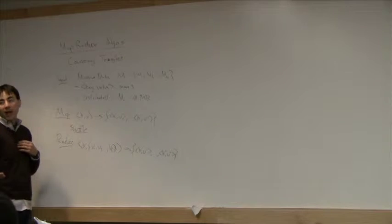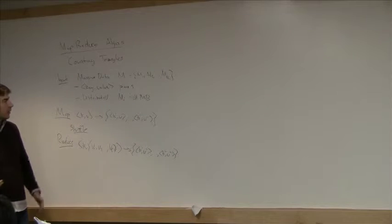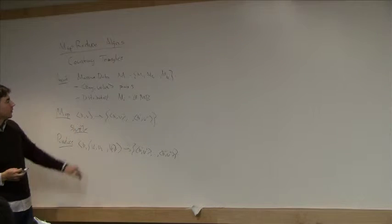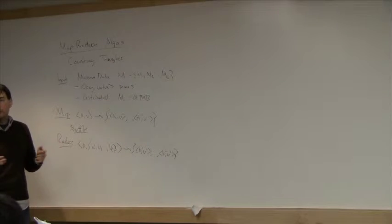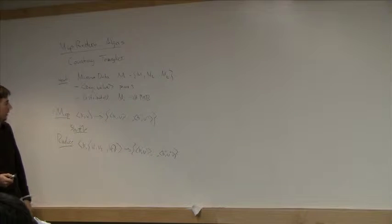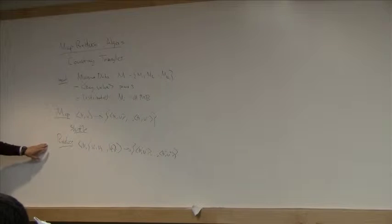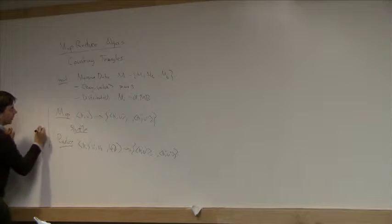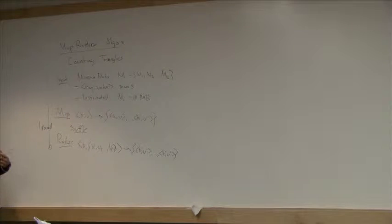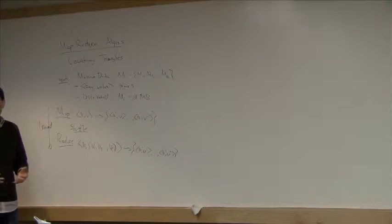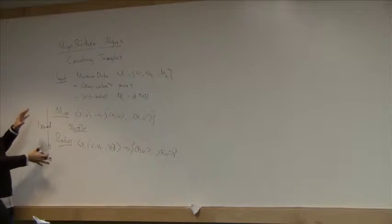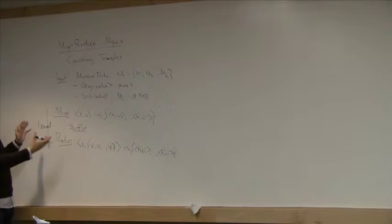These key-value pairs are written back to disk so that the output looks like the input in some way — broken into 64-megabyte blocks distributed across the computers. This is one round of MapReduce, and then you can do a few rounds to compute something. This is the framework we'll be working with and the allowable operations.